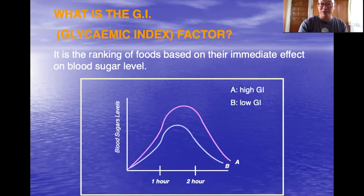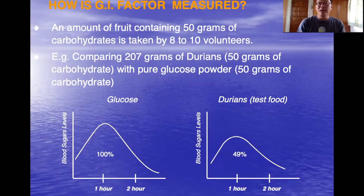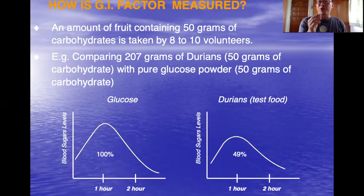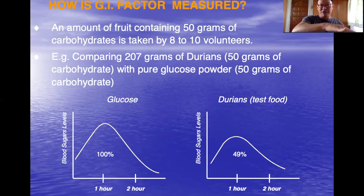Over the course of two hours after consuming the fruit — how did they measure the GI index of these Malaysian fruits? An amount of fruit containing 50 grams equivalent of carbohydrates is given to 10 volunteers. First, the volunteers do a baseline: they consume 50 grams of pure carbohydrates in terms of pure sugar, and over the next two hours the blood sugar level is measured, giving them a curve.